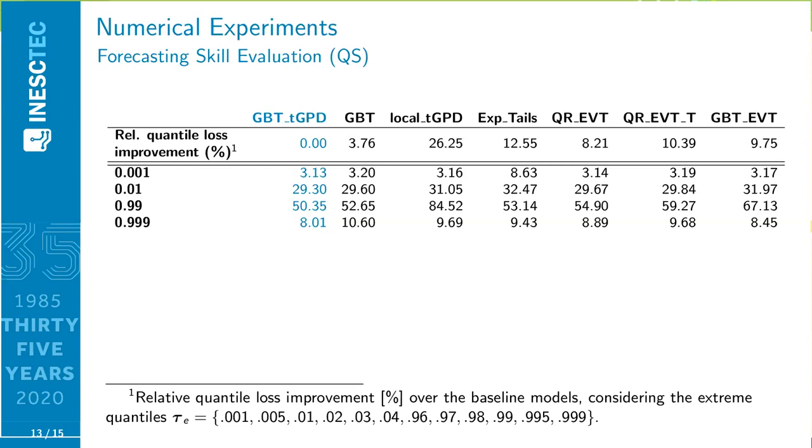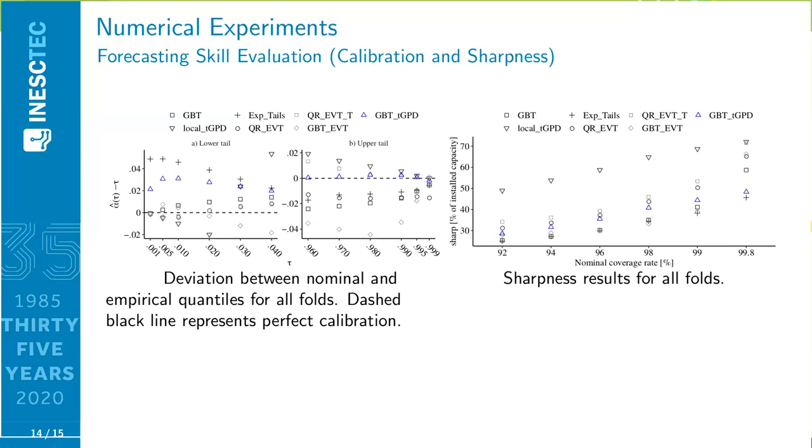In terms of forecasting skill evaluation with the quantile score, the first line of this table shows the improvement over the baselines for all the extreme events. These are the extreme quantiles that we are considering when computing this relative quantile loss improvement. As can be seen, it is greater than 3.7%. Our proposal outperforms all the benchmarks. And then in the remaining lines, we have the quantile score for each method. For specific quantiles, the first one is the 0.1% quantile, then the 1%, 99% and 99.9%. As can be seen again, our model outperforms the benchmarks.